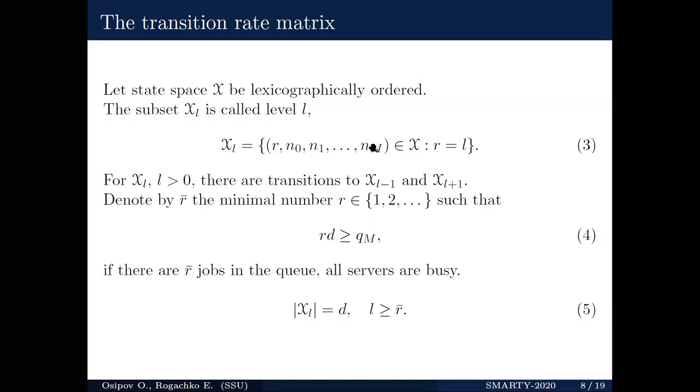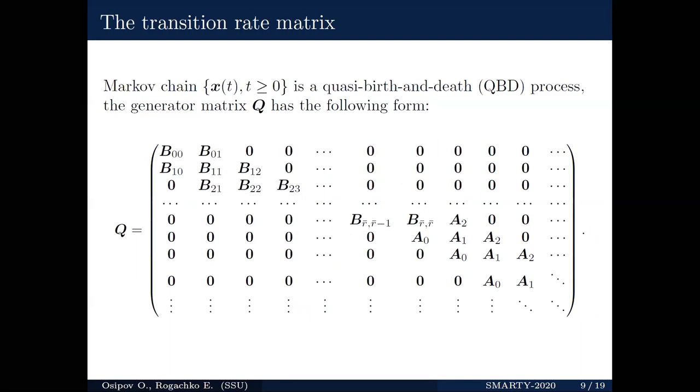It's easy to see from transition rates that the process moves up and down between levels one at a time. Also define R as the minimum number where the condition takes place. When the condition takes place, the cardinality of all levels is the same as the number of tasks for each job. Hence, the process is a quasi-birth-and-death process and the stationary matrix has the following form. If the stability condition takes place, the stationary distribution can be found by the matrix-geometric method.